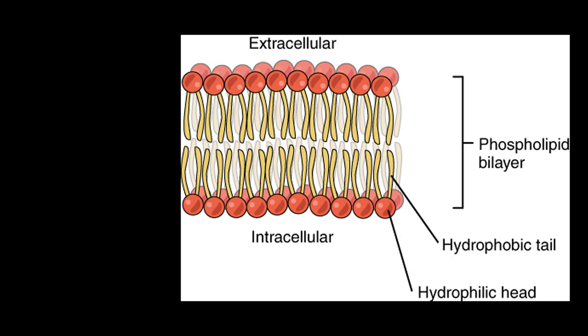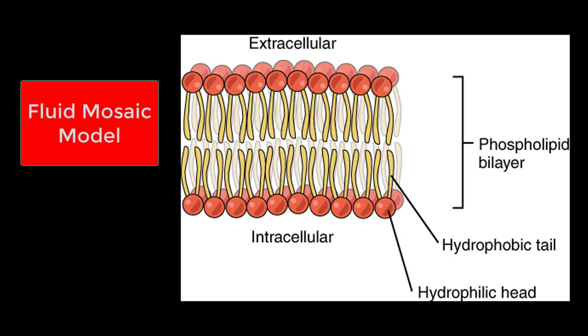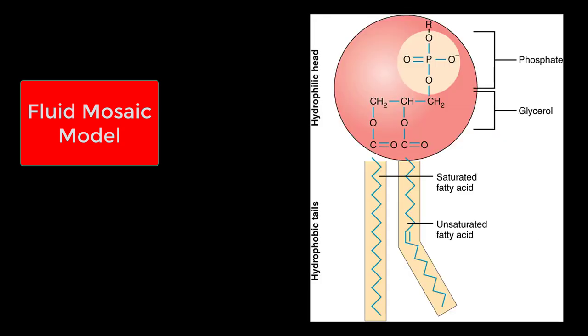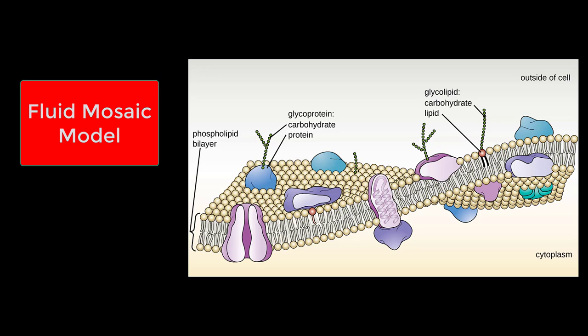The other major way you're going to hear a cell membrane described is as a fluid mosaic model. This one's pretty cool. So this would be what a typical plasma membrane looks like. This one would be of a bacteria—I'll explain why in a moment.